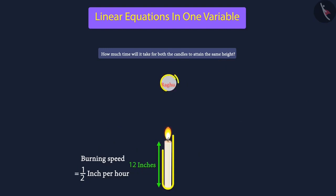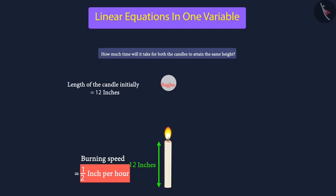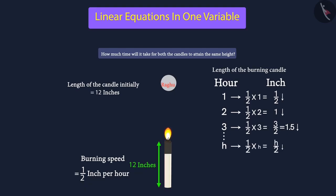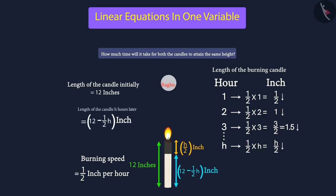Raghu's candle is 12 inches long. The candle is burning at a speed of half-inch per hour — in one hour it will burn half-inch, in two hours one inch, in three hours one and a half inch. Therefore, we can say that in each hour, the candle will burn 1/2 times. Initially Raghu's candle was 12 inches in length. So, we can say that after H hours, the length of the candle will be 12 inches minus (1/2 × H) inches.